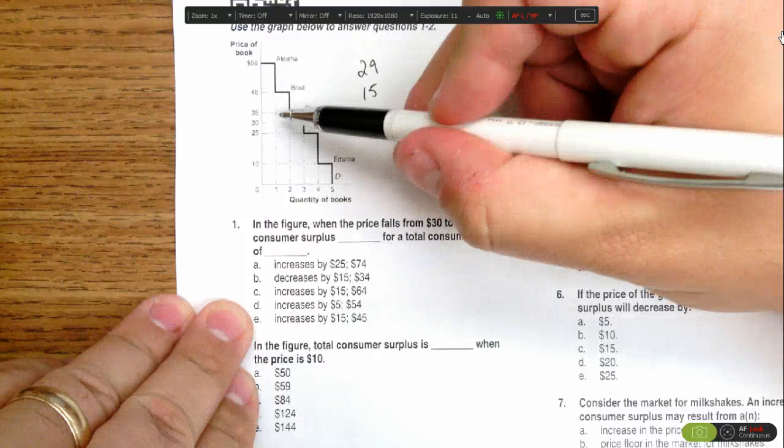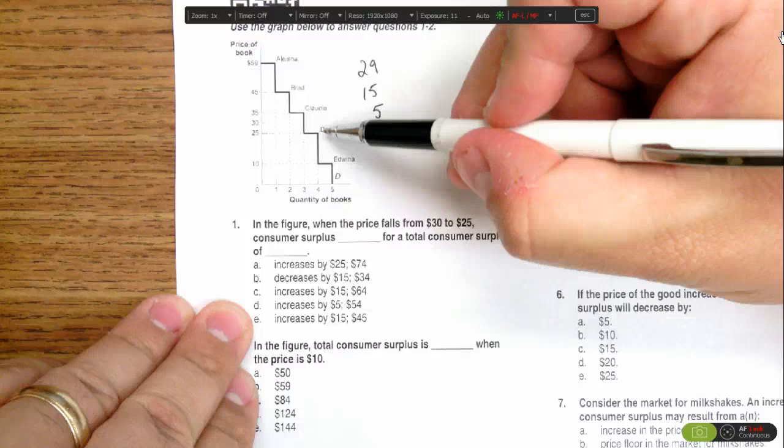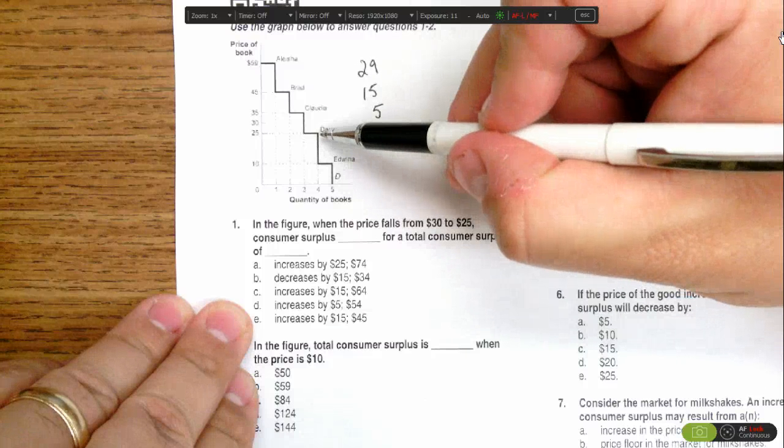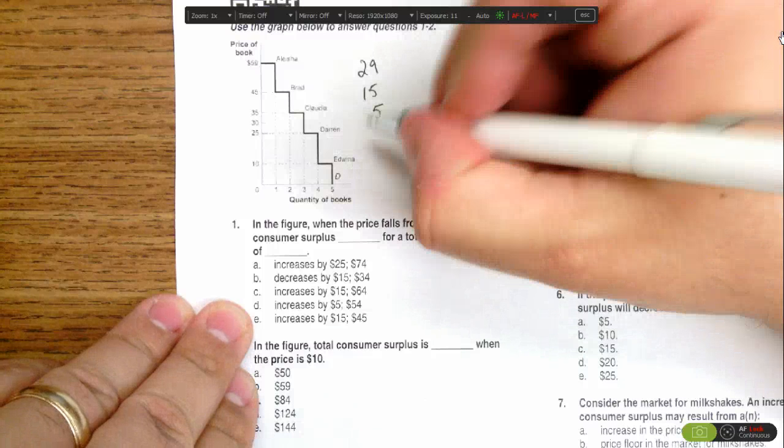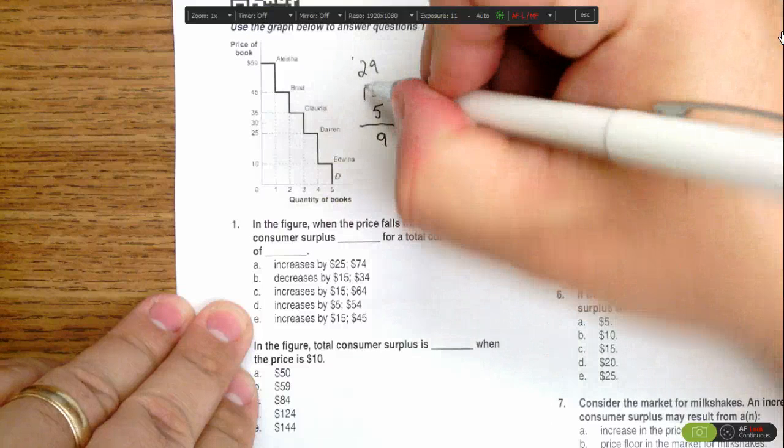Claudia was willing to pay $35, but only has to pay $30, so she gets a $5 surplus. Darren's out of the market because he's willing to pay $25, but the price is $30. So we see here a total consumer surplus of $49.